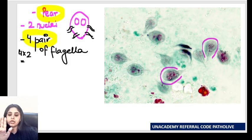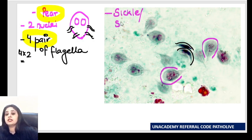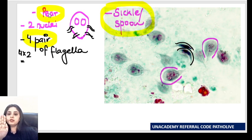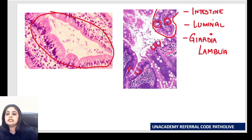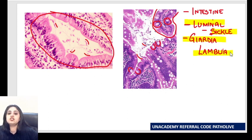Now if I turn it sideways to the lateral view, it starts looking like a spoon or a sickle. So there are two views: front view — pear-shaped; side view — sickle or spoon-shaped. Those are the microbiology pictures from a stool sample. But in an intestinal biopsy, a pathology sample, Giardia looks like the side view — those sickle or comma-shaped organisms sitting in the lumen. Two hints: number one, luminal; number two, sickle-shaped. When you see a luminal organism that is sickle-shaped, you're dealing with Giardia lamblia.